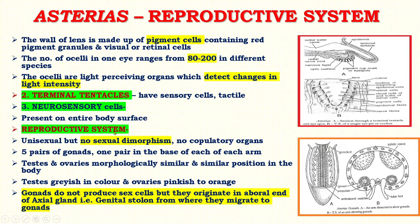The reproductive system: Asterias are unisexual animals but there is no sexual dimorphism and no copulatory organs occur. There are five pairs of gonads, one pair at the base of each arm. Testes and ovaries are morphologically similar in structure and have similar positions in the body — testes are grayish in color and ovaries are pinkish to orange in color. An important feature is that gonads do not produce sex cells; they originate at the aboral end of the axial gland — the genital stolon — from where they migrate to the gonad.